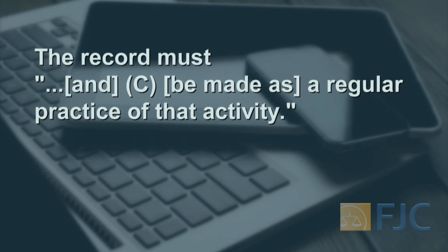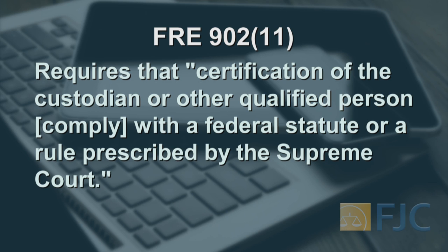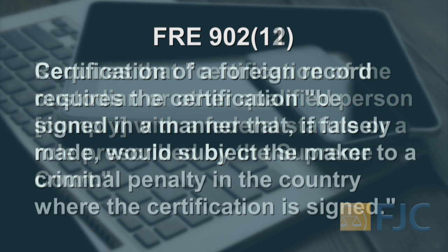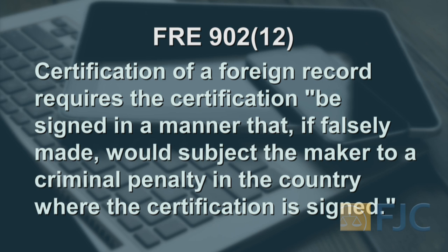To support the certification of evidence of a domestic record, Rule 902 Section 11 requires that the certification of the custodian or other qualified person comply with a federal statute or a rule prescribed by the Supreme Court. Certification of a foreign record under Rule 902 Section 12 requires that the certification be signed in a manner that, if falsely made, would subject the maker to a criminal penalty in the country where the certification is signed.